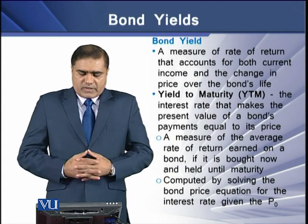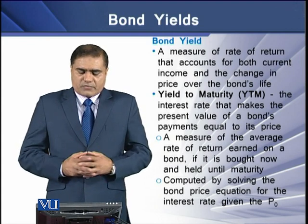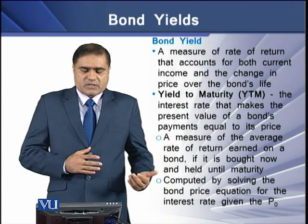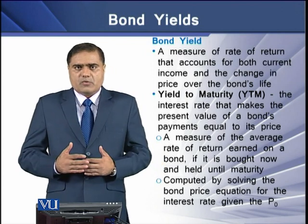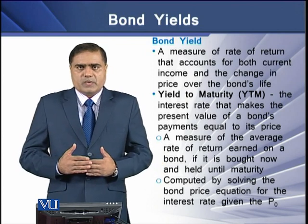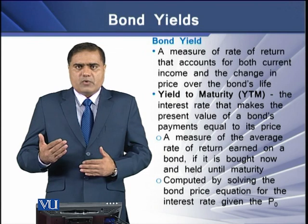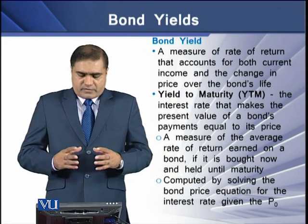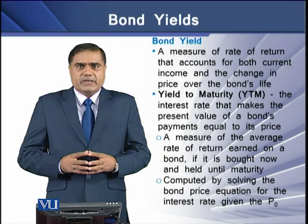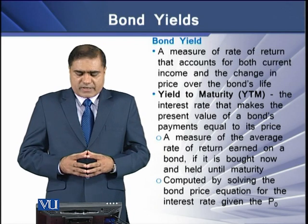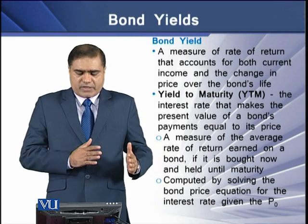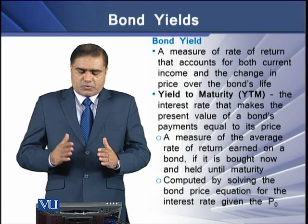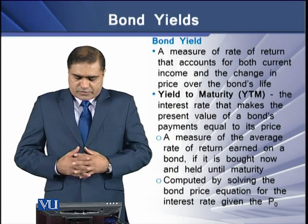By bond yield we mean a measure of rate of return that accounts for both current income and the changes in the bond prices over the entire life of the bond till its maturity. By yield to maturity we mean the interest rate that makes the present value of a bond's payments equal to the price of the bond.